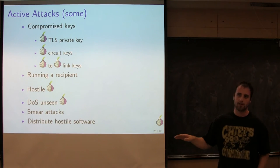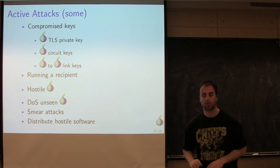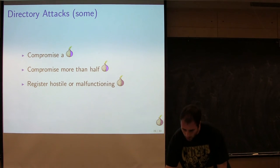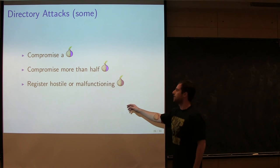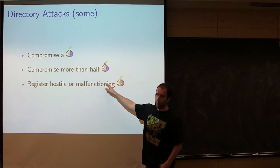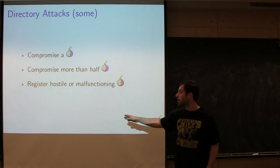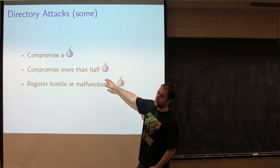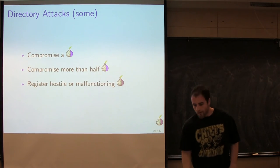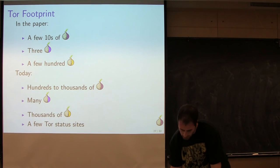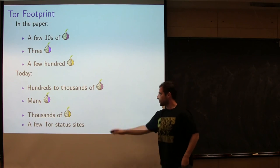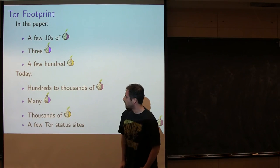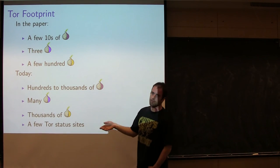Active attacks involve compromising the Tor software, getting a hold of private keys, or running hostile components in the network. If you can see 10% of the Tor network, you can try to DOS the other 90% to force traffic through your 10%. Smear attacks are about giving Tor a bad image so that universities and operators are forced to take down nodes, or distributing compromised versions of Tor. If you compromise more than half of the directories, you've compromised Tor as a whole.